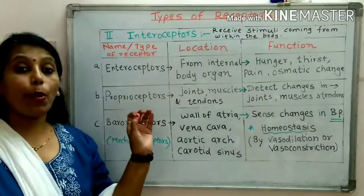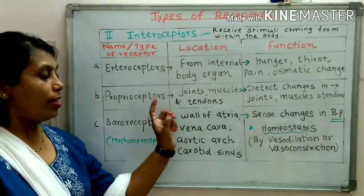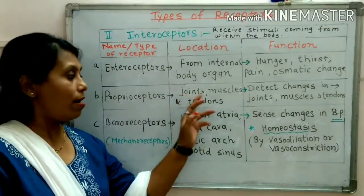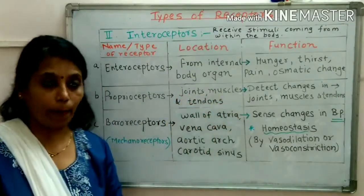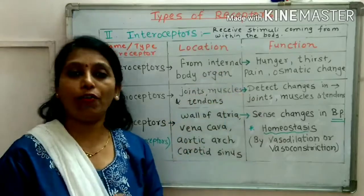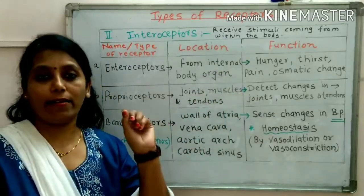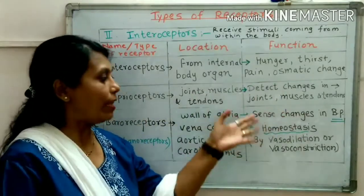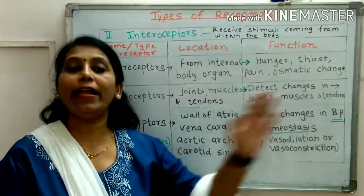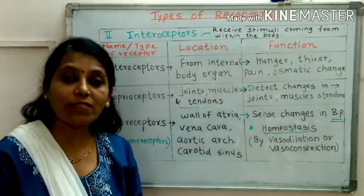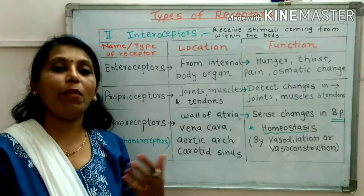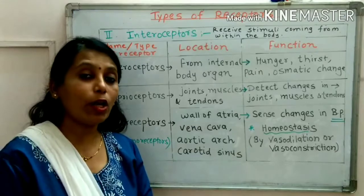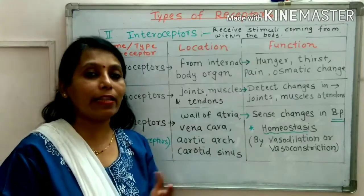Proprioceptors are located in joints, muscles, and tendons. Their function is to detect changes present in joints, muscles, and tendons, and they are responsible for movement. With the help of muscles, bones, and joints, we can move because of the receptors which detect these changes.